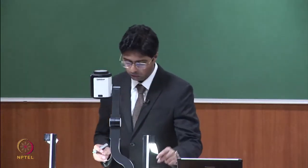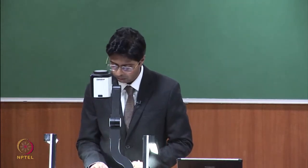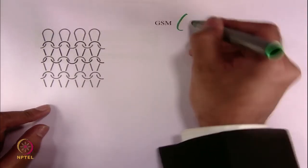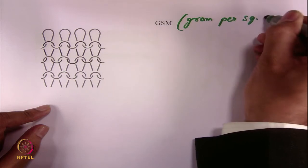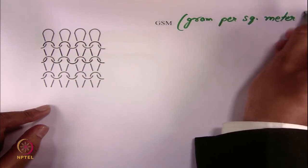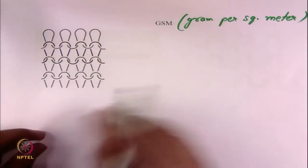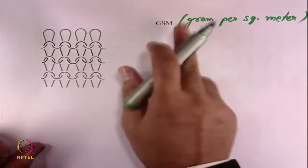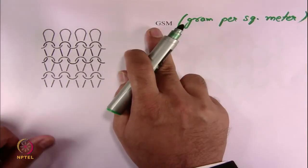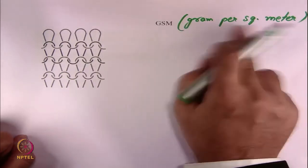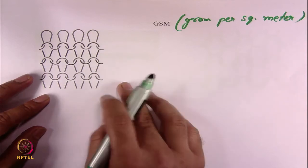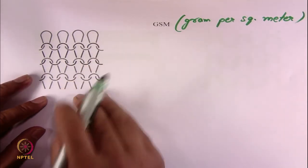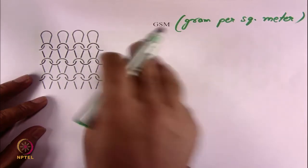Now let's come to the second fabric property which is very, very important: GSM. GSM is actually defined as gram per square meter. So if you take an area of the fabric, the weight per unit area is defined by GSM — the weight is in grams and the area is 1 meter square. To find out the GSM with respect to other parameters, there is a very useful relationship which I am going to express here.